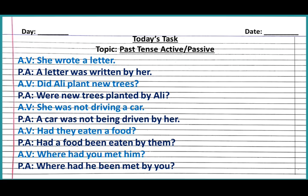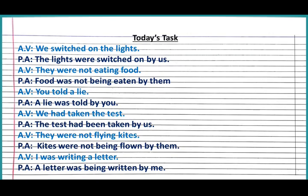For continuous sentences, we always use 'being' then the third form of verb. 'She was not driving a car' becomes 'A car was not being driven by her.' For past perfect: 'Had they eaten food?' becomes 'Had food been eaten by them?' For double interrogatives: 'Where had you met him?' becomes 'Where had he been met by you?' These sentences were also changed into passive voice as part of your task.